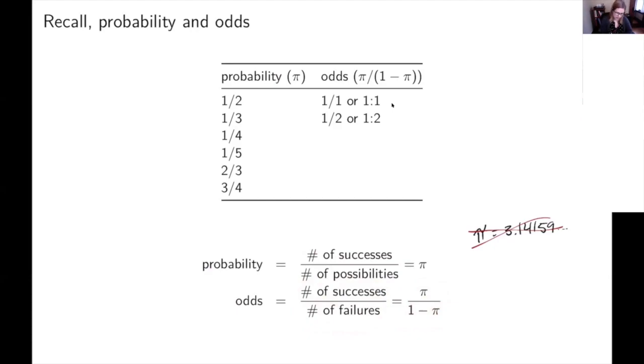So if the probability is 1 over 2 or 0.5, then the odds are going to be 1 to 1. 1 success, 1 failure, and you could either write it kind of as a fraction or, you know, 1 colon 1. You could also just write it as 1 if you wanted to.